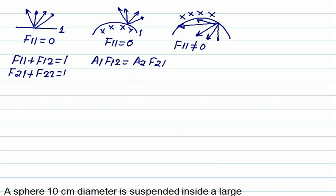So if we have two bodies, that is body number 1 is the plane and body number 2 is also plane, for this body F11 equals to 0. F22 is also equals to 0 because this is a flat plate.